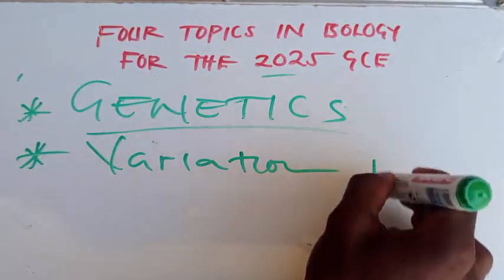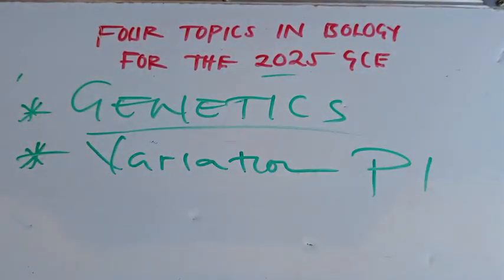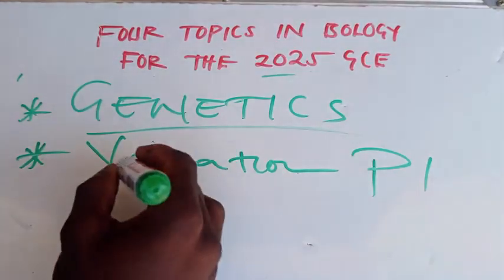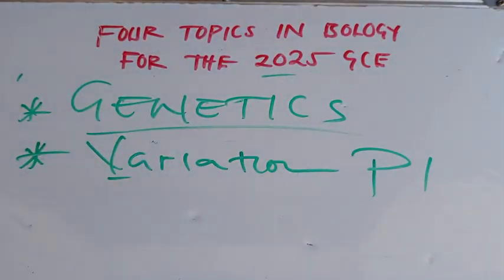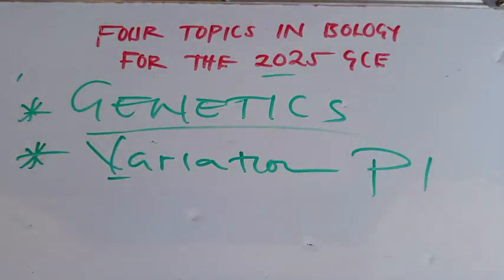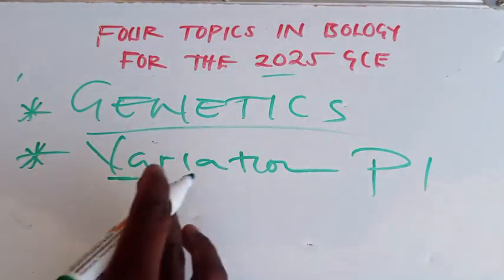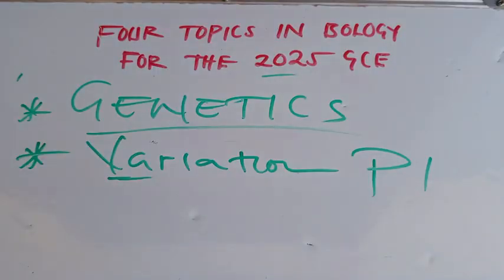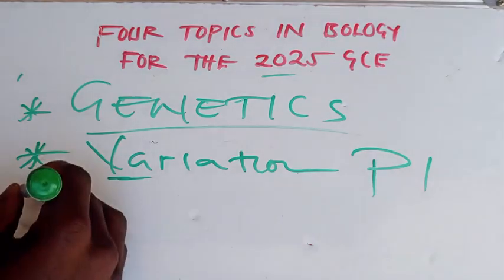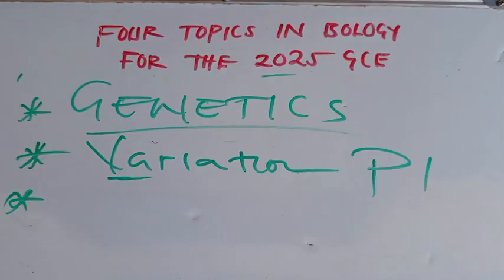In Paper 1, most of the questions asked are under the subtopic of variation. Here, you need to know the definition of variation, the different types of variation — continuous and discontinuous — and most importantly, examples of both continuous variation and discontinuous variation.